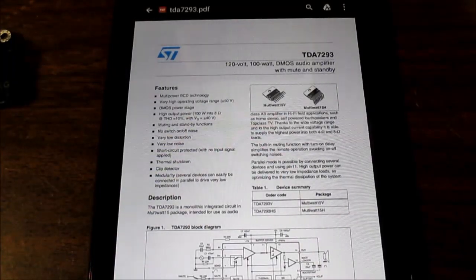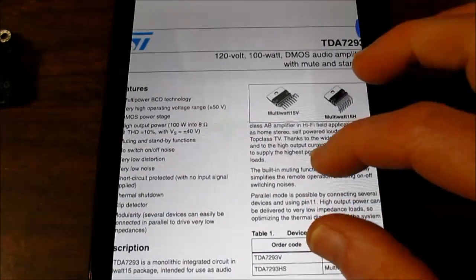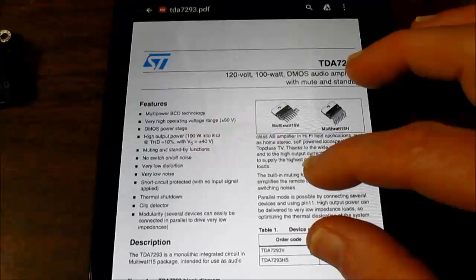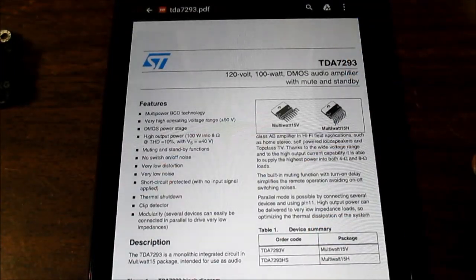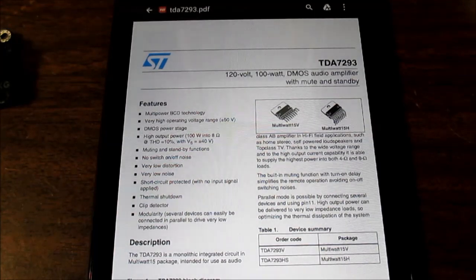Well, here is the information. Let's stretch that out a little bit. 120-volt, 100-watt, DMOS audio amplifier. DMOS just means it has MOSFET output transistors. It's a diffused metal oxide semiconductor, I think it stands for. 100 watts, yeah right, of course it's 100 watts at 10% distortion, it says.